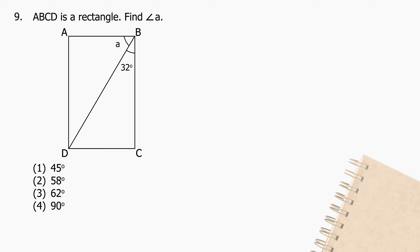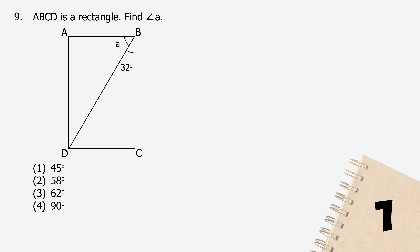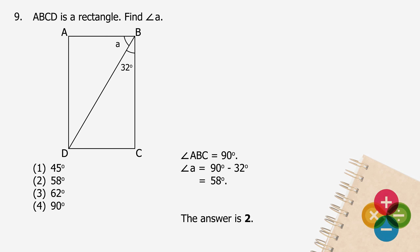Question 9: ABCD is a rectangle. Find angle A. Angle ABC is equal to 90 degrees. Angle A will be 90 degrees minus 32 degrees, and the difference is 58 degrees. The answer is 2.